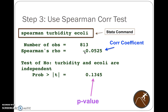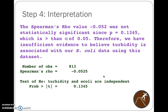The question is: is this correlation statistically significant? In this case, no. Turbidity and E. coli have a p-value of 0.13 for this Spearman test. For interpretation: the Spearman rho value of negative 0.0525 is not statistically significant because the p-value of 0.13 is greater than 0.05. Therefore, we have insufficient evidence to believe turbidity is associated or correlated with our E. coli data using this data set. Turbidity would probably not be a good indicator of E. coli.